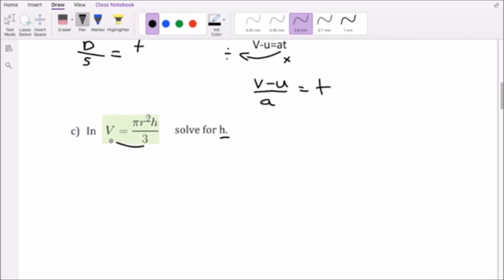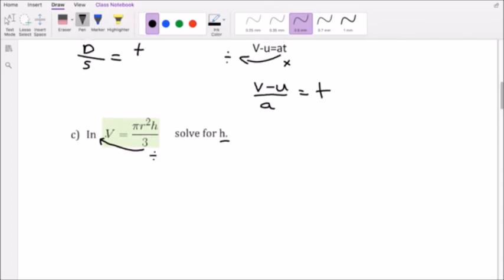If we take a look here, the 3 is currently a divide. And the inverse of the opposite operation when it moves across that equal sign is become a multiply. So let's move it over and we're going to end up with 3V equals πr²h.